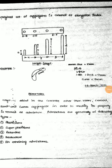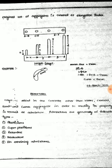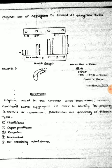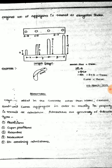Admixtures are substances added in concrete other than water, cement, sand, and coarse aggregate, in order to modify its properties. Admixtures are generally of the following types: plasticizers, superplasticizers, retarders, accelerators, and air entraining admixtures.